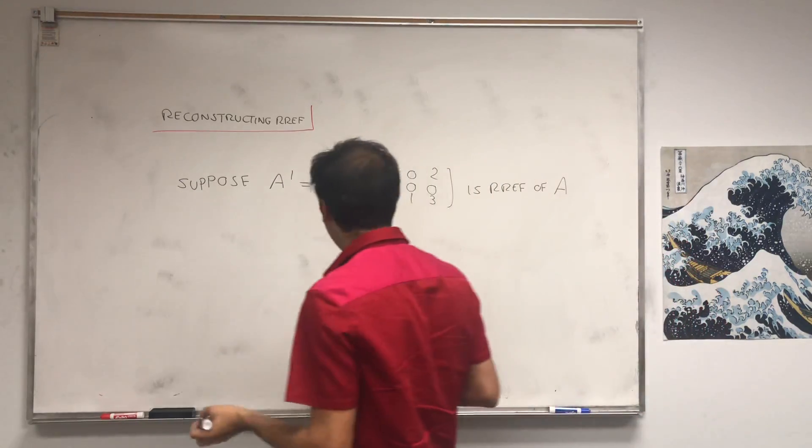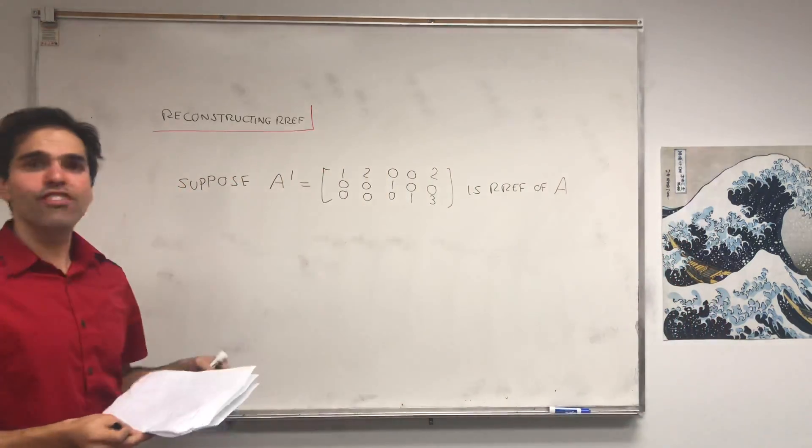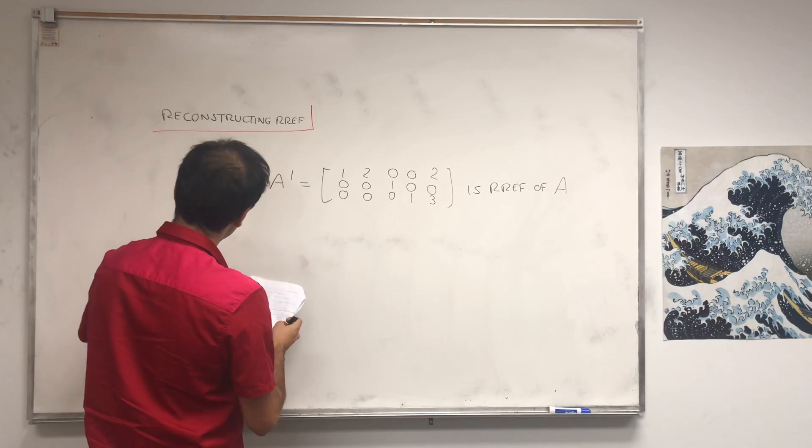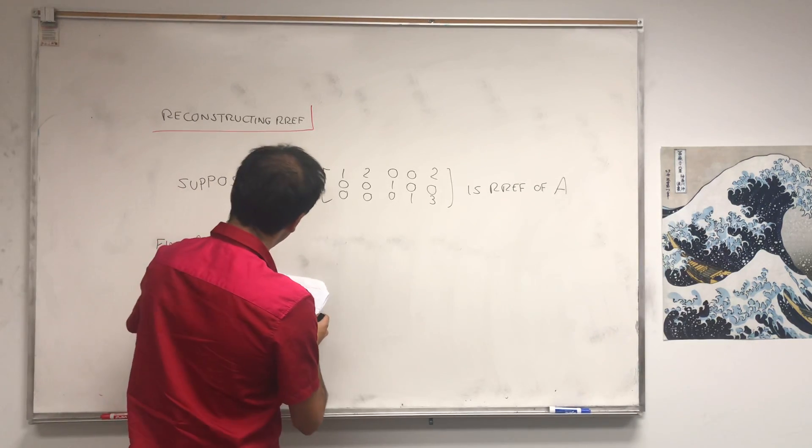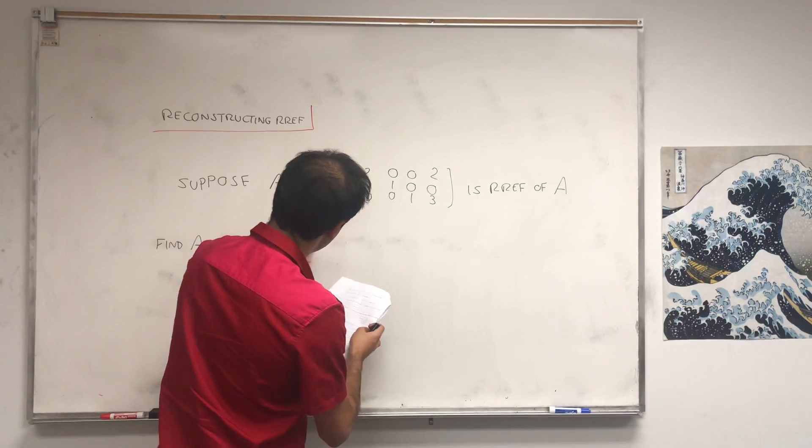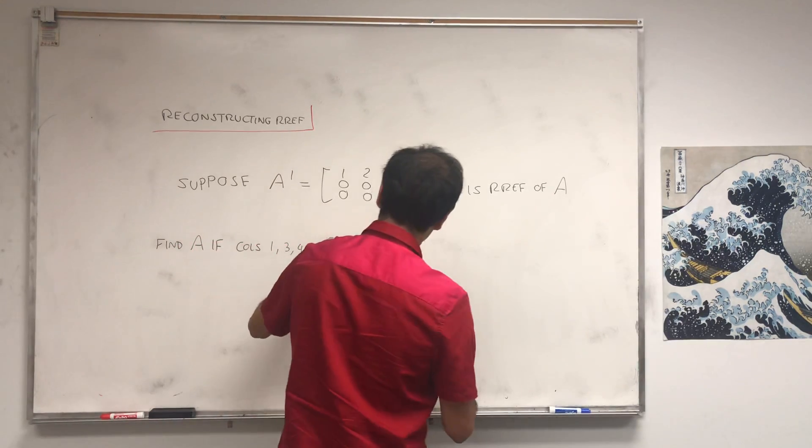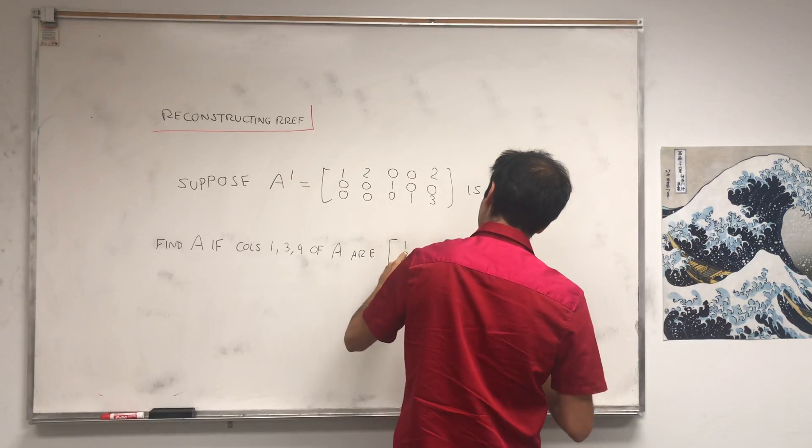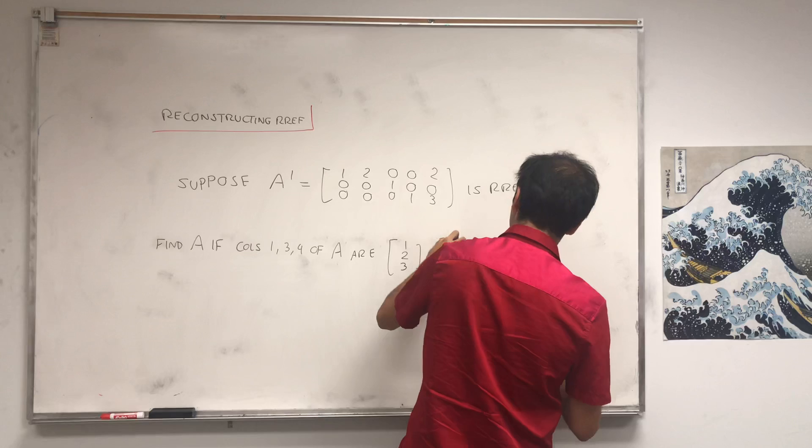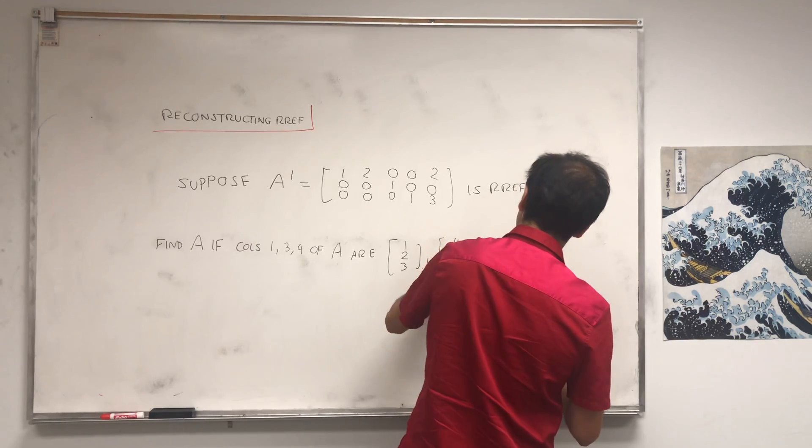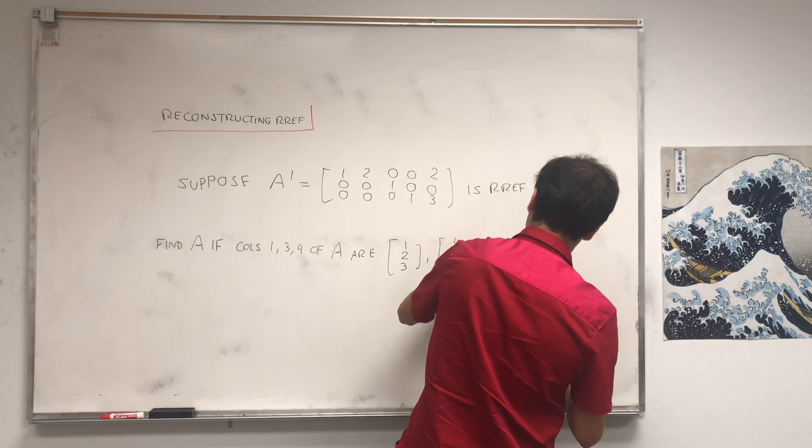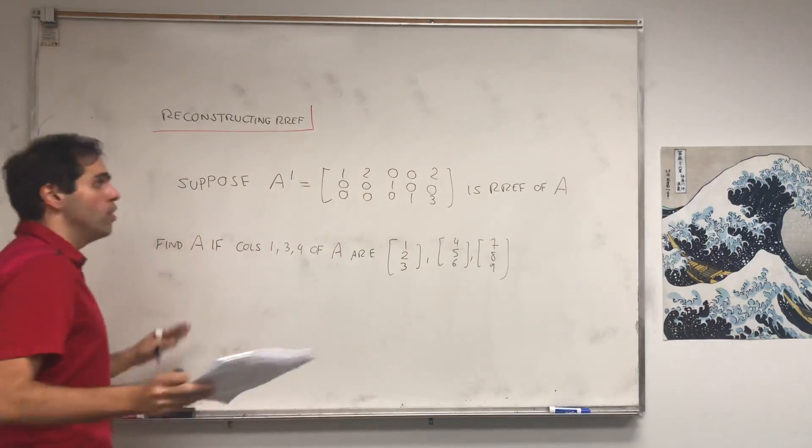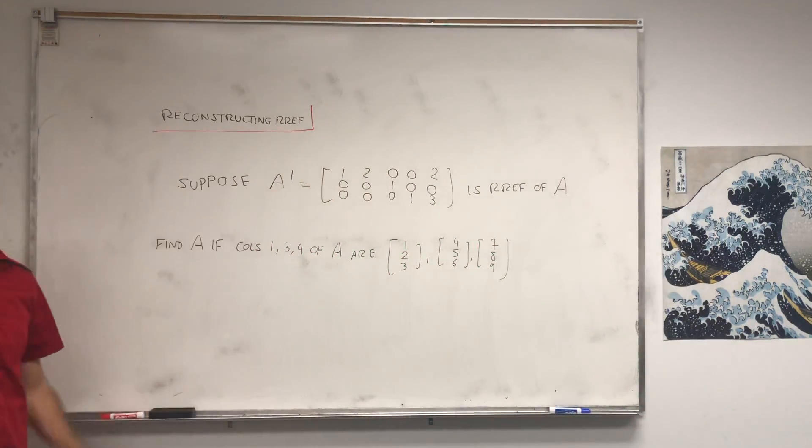And we can actually find A if we know what its pivot columns are. So find A if columns 1, 3, and 4 of A are as follows. And I was very creative, I just said 1, 2, 3, 4, 5, 6, 7, 8, 9. So in other words, if you row reduce, you don't know what the matrix A is anymore, but if you know its pivot columns, we can actually reconstruct the matrix A.